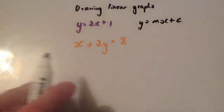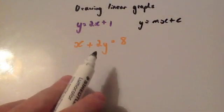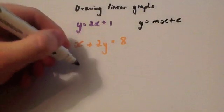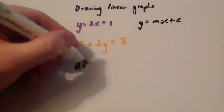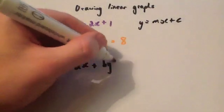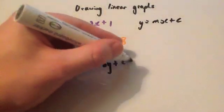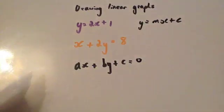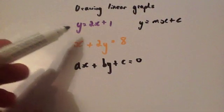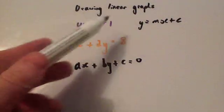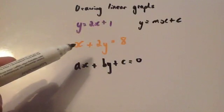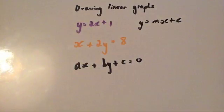There are some other common formats. Here's an example: x plus 2y equals 8. Whenever you're doing A-level maths you might see this format: ax plus by plus c equals 0. You'll get to see lots of different formats, but we're going to look at in today's lesson how to draw y equals 2x plus 1 and x plus 2y equals 8.